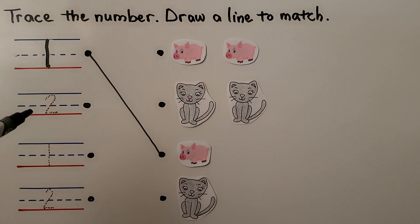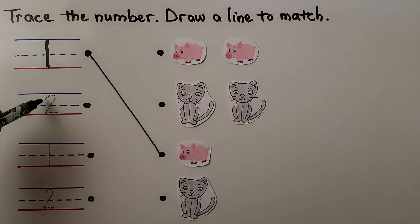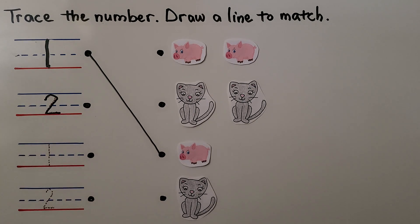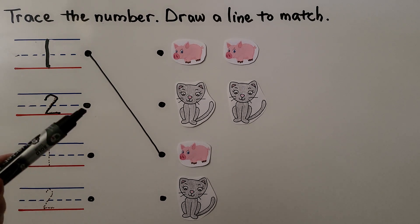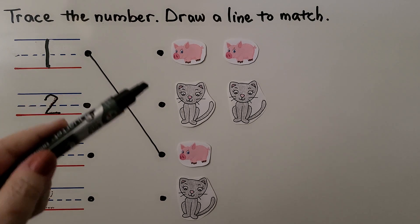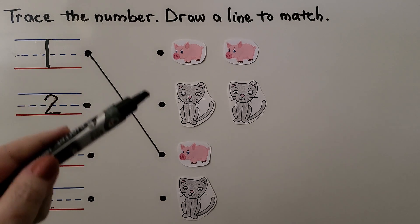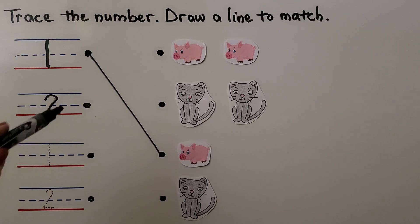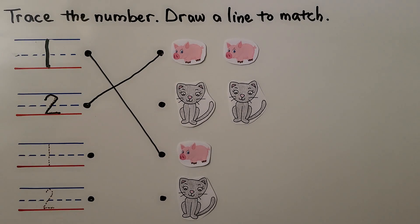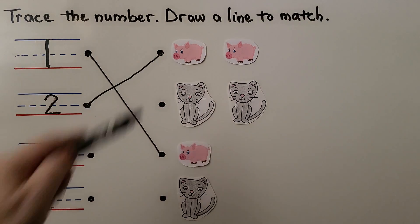Here we have the number 2. We start here, curve around, come down on a slant, and then go straight off to the side. Do you see two animals we could draw the line to? I see two pigs. I also see two cats, so we could draw our line to either one. Let's do it to the pigs. Number 2 for two pigs.